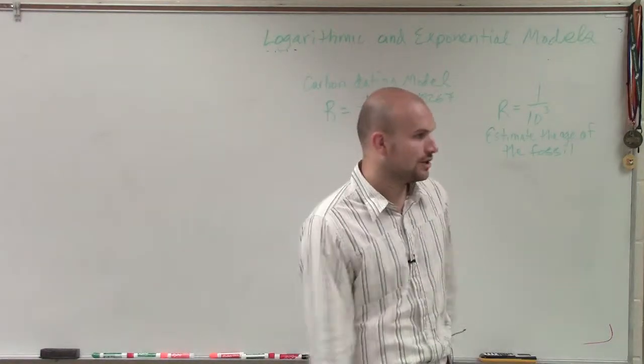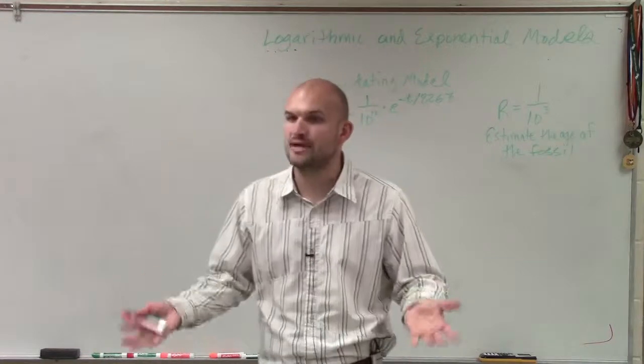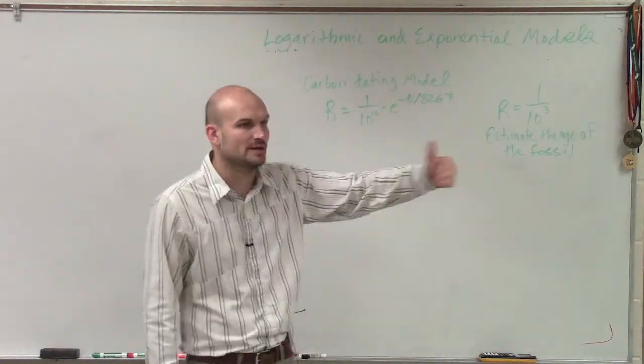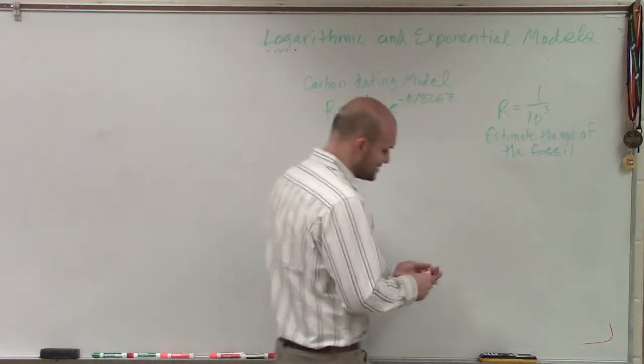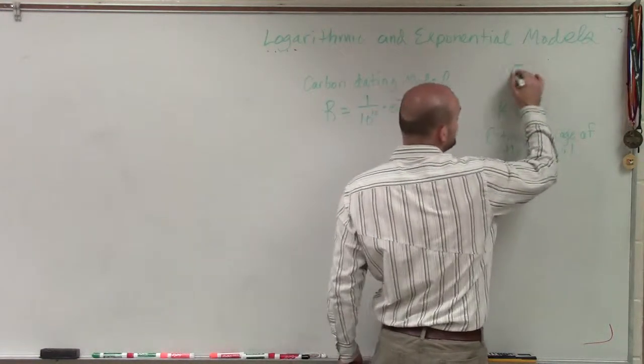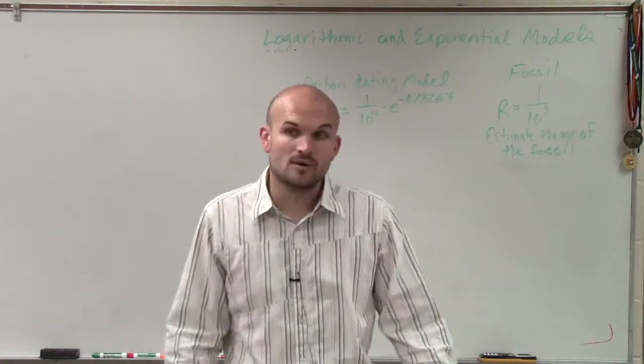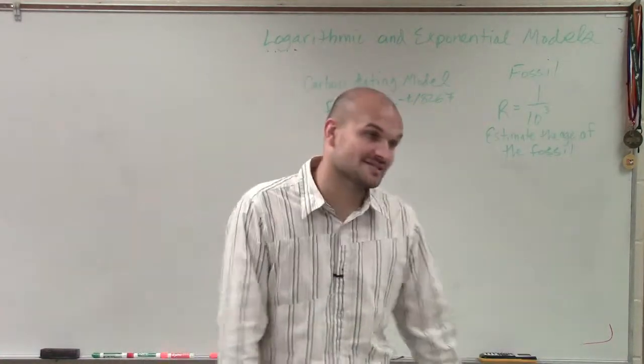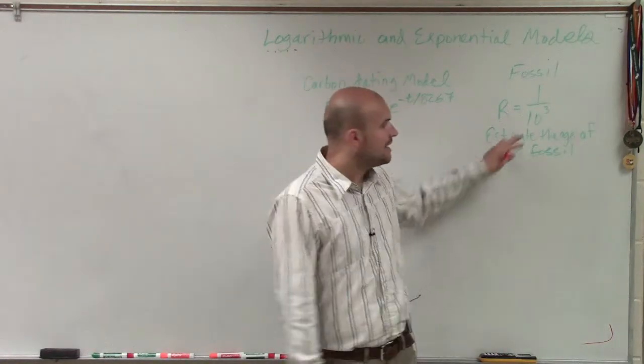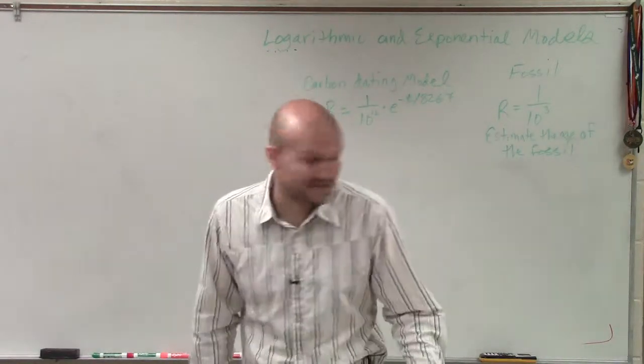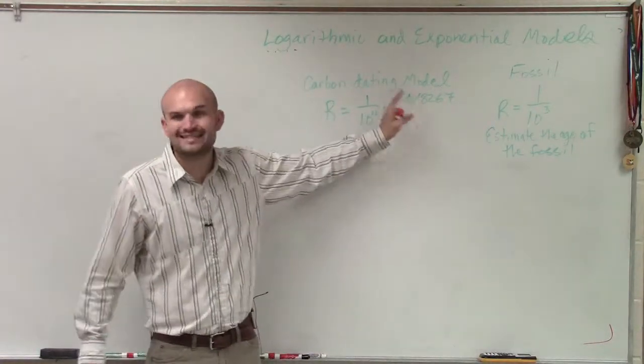You guys always hear, oh, these dinosaur bones. And they say, oh, this was in this period. They're able to do that by using carbon dating and by looking at how much carbon is left in the fossils or any other figure. So what they're saying is, we have a fossil. They found one. They found a fossil. And the ratio of that carbon fossil is r equals 1 over 10 to the third power. And what they want us to do is estimate the age of the fossil. Therefore, we need to figure out what t is going to be.